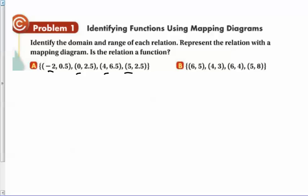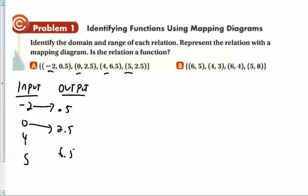So this is a function. And when you talk about mapping, you can go input and your input put negative two, put zero, put four, put five. And output put 0.5, 2.5, 6.5. And there's a 2.5, but then draw arrows to it. So negative two goes to 0.5, zero goes to 2.5, four goes to 6.5, five goes to 2.5. So there's your mapping.